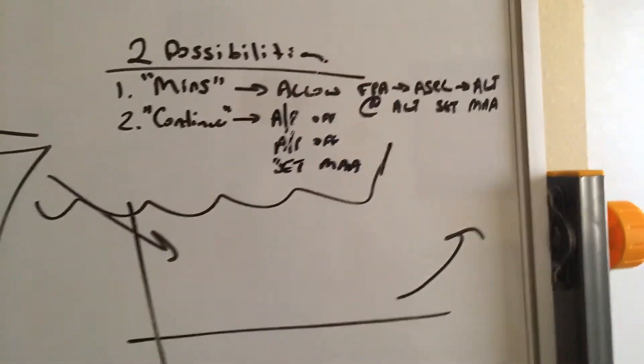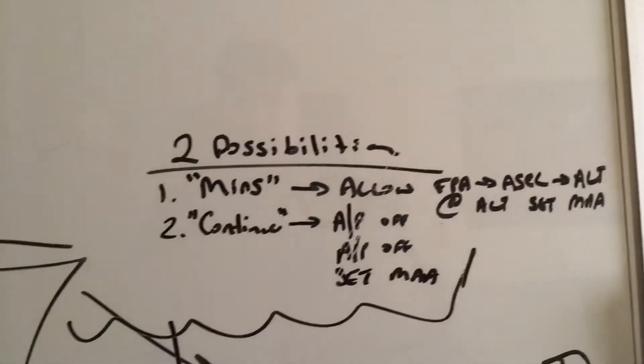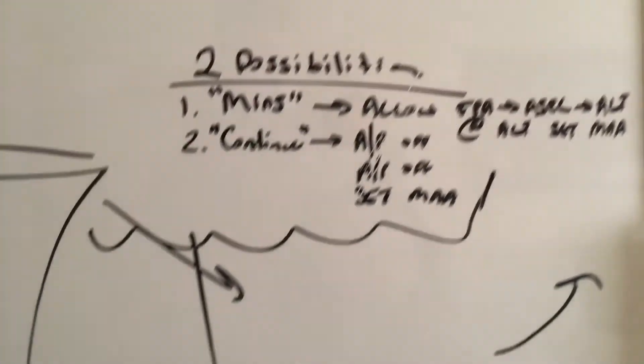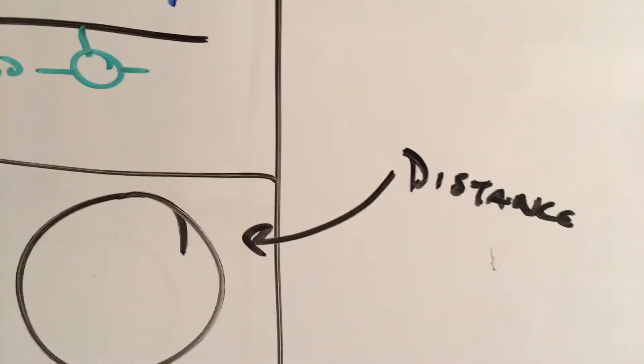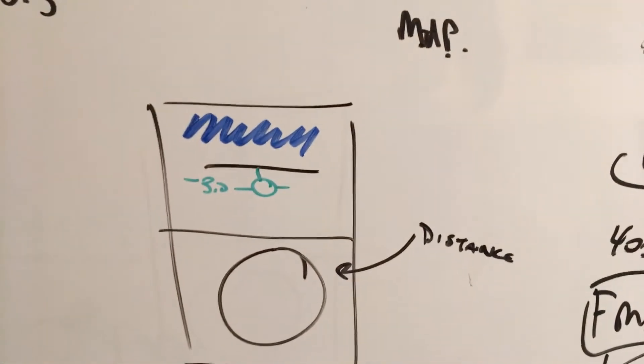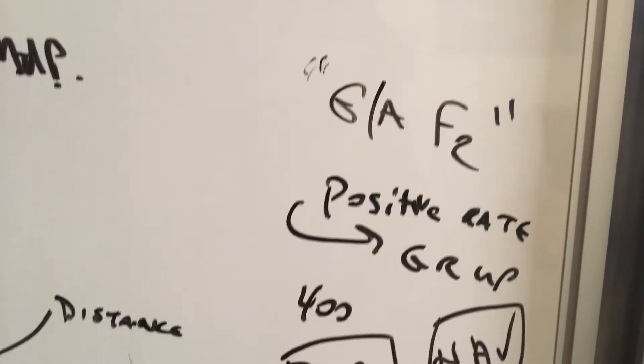So, let's say we hear minimums. We allow transition. She's going to level off at MDA. Then we fly to missed approach point. We'll see the distance here on your primary flight display. At the missed approach point, go around, flaps 2, positive rate, gear up, 400.